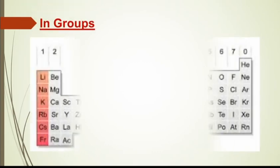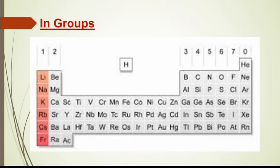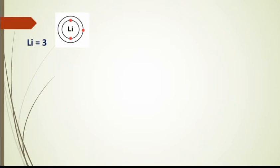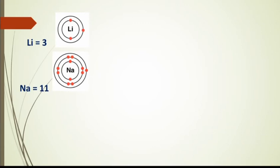अब groups की बात कर लेते हैं। Periodic table में total 18 groups present हैं। हम group number 1 लेते हैं। Group number 1 में first element है lithium, इसका atomic number है 3, इसमें 3 electrons हैं - first shell में 2, second में 1 electron। Next element है sodium, इसका atomic number 11 है। 11 में से 2 electrons first shell में, 8 electrons second shell में - total 10 electrons। जो 11th electron है वो third shell में चला जाएगा, क्योंकि second shell की capacity total 8 electrons की है, वो 8 electrons से ज़्यादा accommodate नहीं कर सकता।